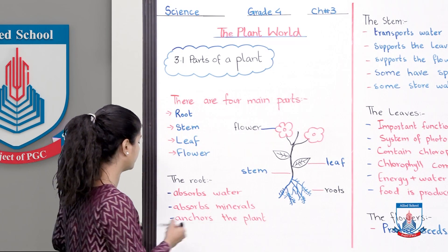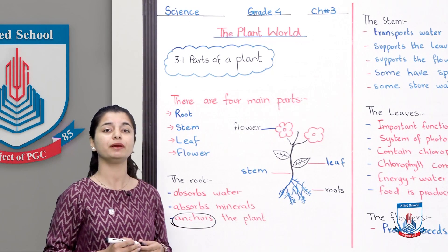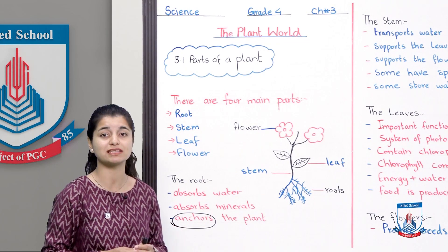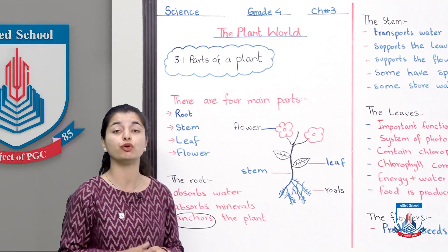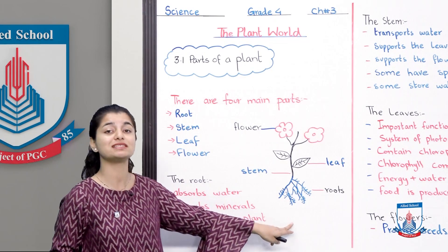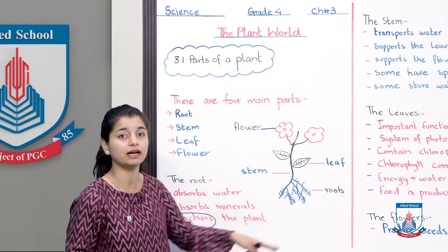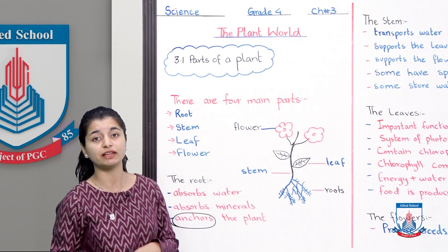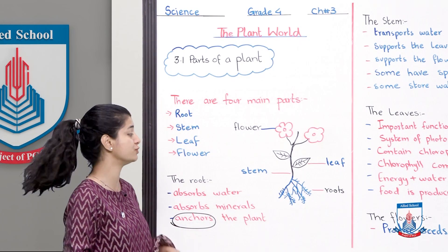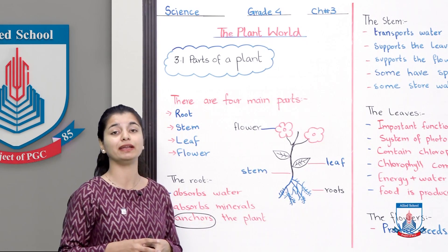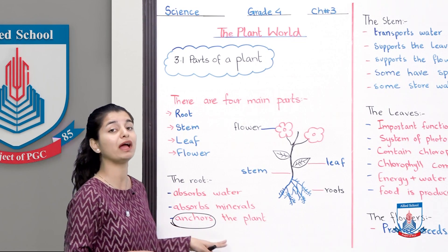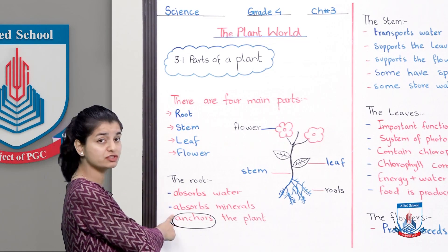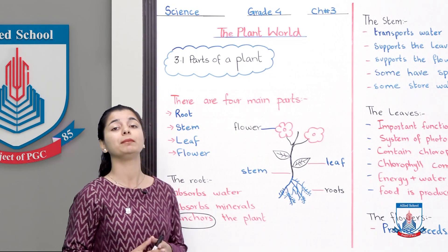The roots also anchor the plant. Have you ever heard the word anchor? Like when boats go to sea, you can anchor them to the land or the side of the sea. Anchor basically means to support it and to stop it from moving. The whole plant is anchored in order to keep it in place. In all situations, the roots keep the plant supported and anchored. So roots absorb water, roots absorb minerals, and roots anchor the plant.